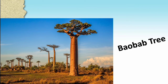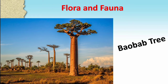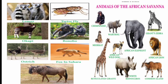The major trees of Africa include the baobab tree, the fever tree and the sausage tree. Major animals of Africa include the lemur, tsetse fly, okapi, bonobo, ostrich, fennec fox in Sahara, wildebeest, chimpanzee, warthog, African wild dog, African elephant, African lion, Grant's zebra and reticulated giraffe.